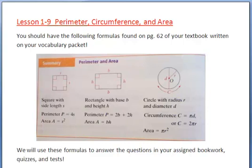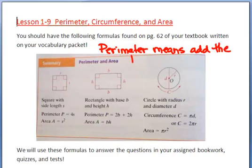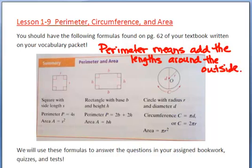If you look on page 62 of your textbook, you're going to see these formulas. The square with side length S — perimeter means add the lengths around the outside. If you have a square and each side is S, you add them all together: 1, 2, 3, 4 S's, which is why the perimeter of a square is 4S.